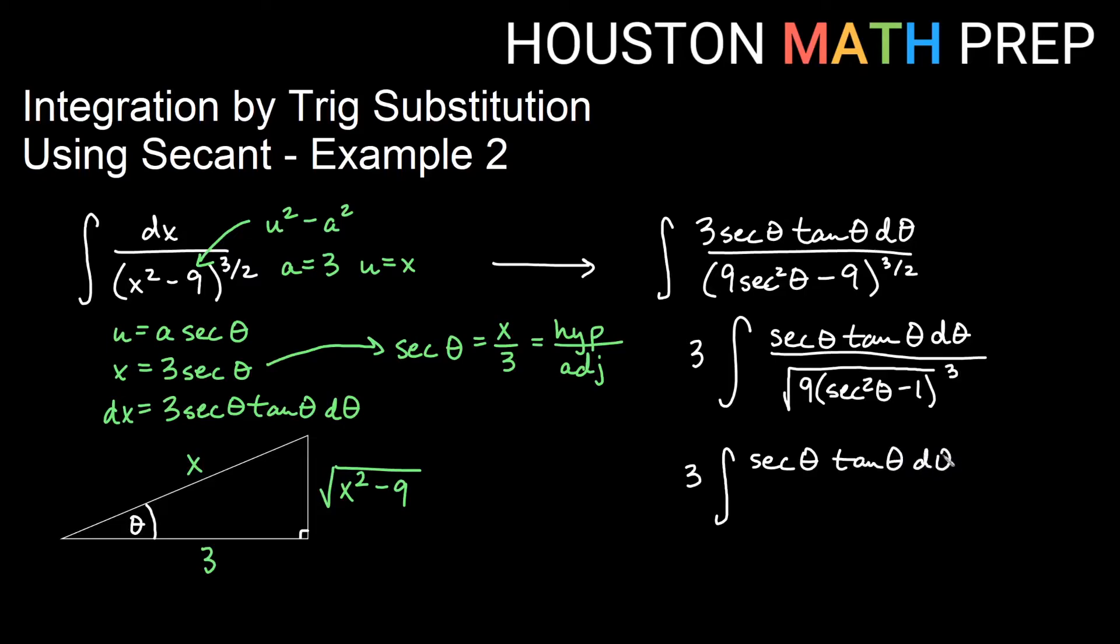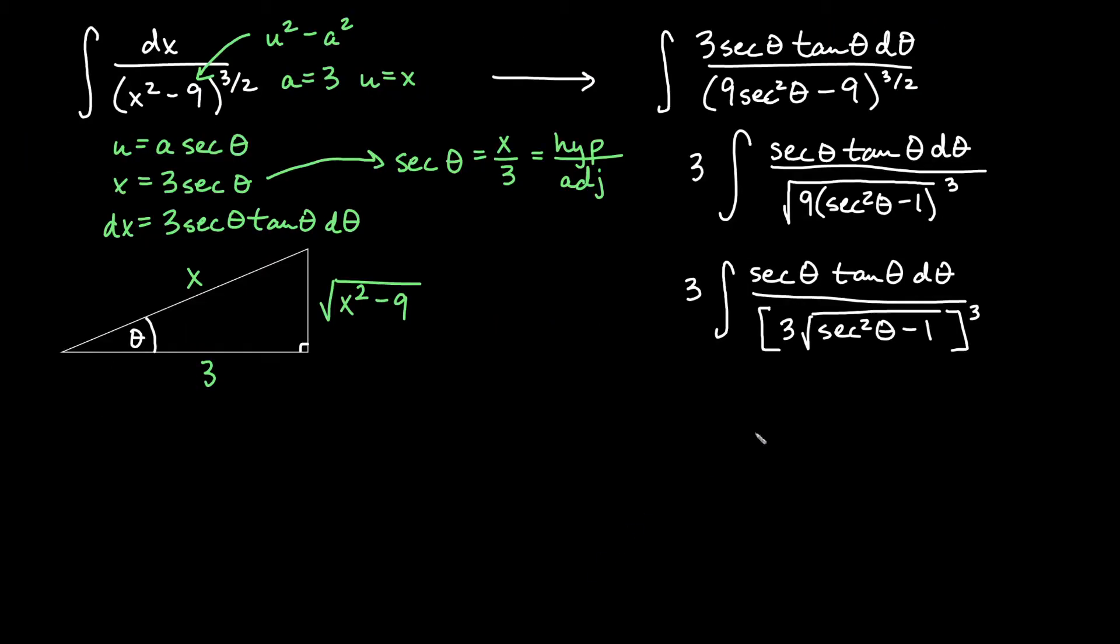So we have secant theta tan theta d theta. We still have our 3 on the outside. If I factor out the square root of 9, that would become a 3 there. And then we would have the square root of (secant squared theta minus 1). And all of that would be cubed. And if you notice this 3 coming out of the root, we still have the cube operating on the 3. That's really going to be a 3 cubed, which is 27.